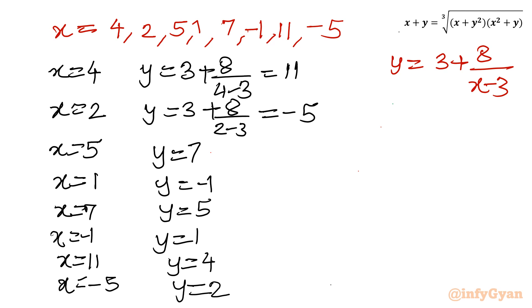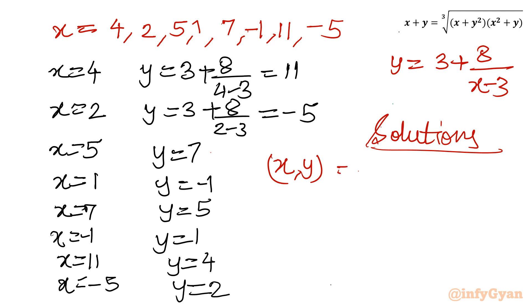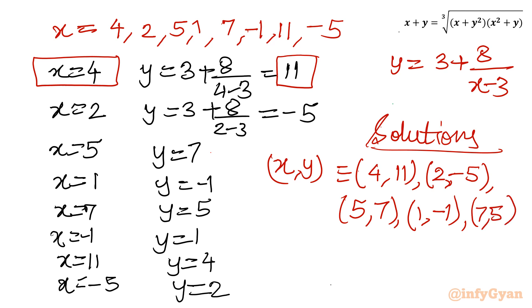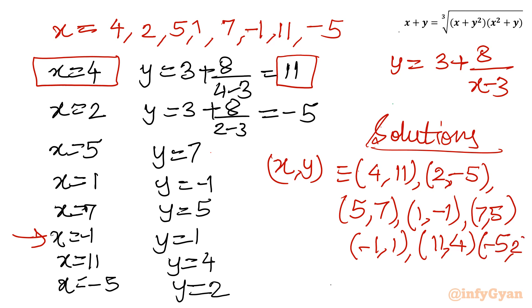So we have 8 solutions total for (x, y): (4, 11), (2, −5), (5, 7), (1, −1), (7, 5), (−1, 1), (11, 4), and (−5, 2). These are all the non-zero integer solutions to the original Diophantine equation.